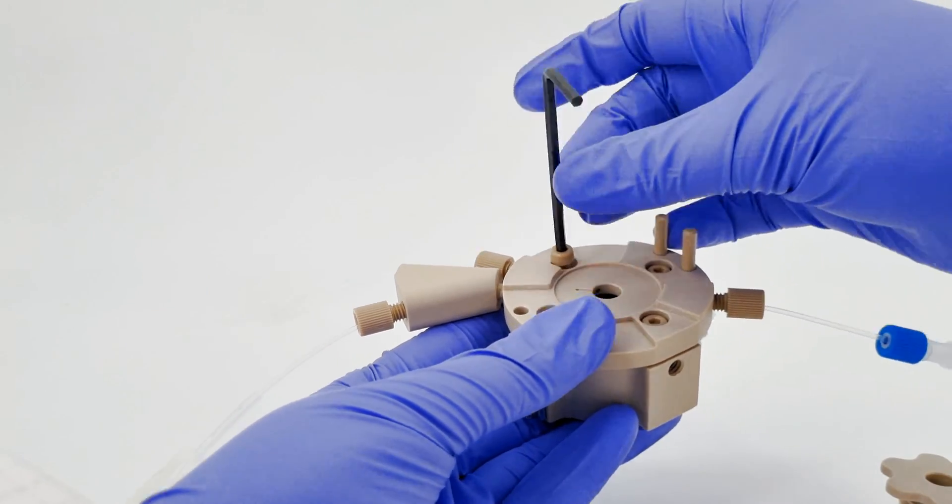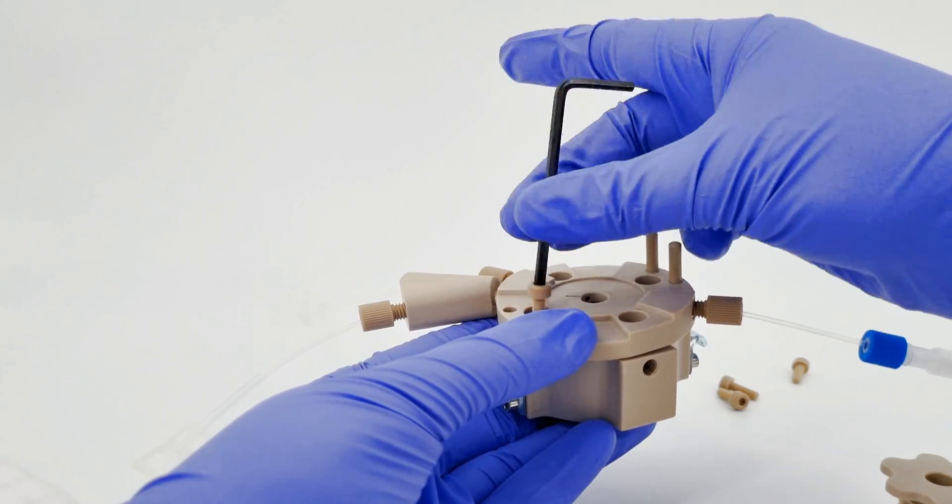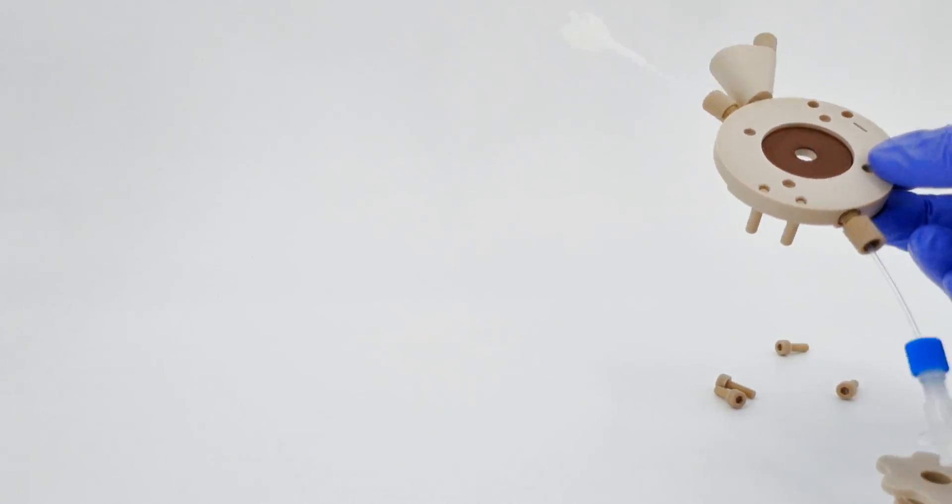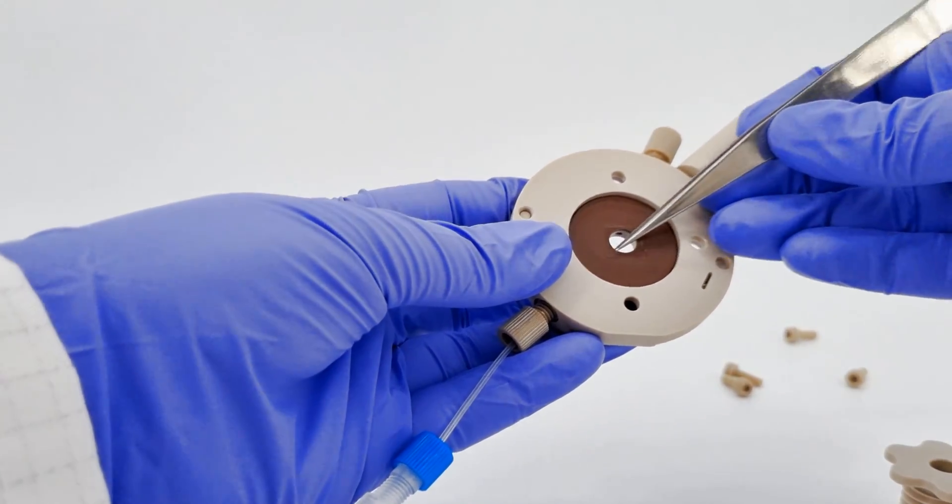To access the polarizing electrode gasket, start by unscrewing the four dedicated screws. Once separated, utilize tweezers to remove the gasket.